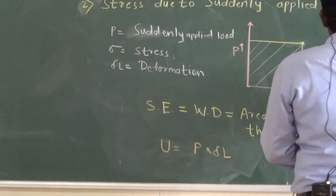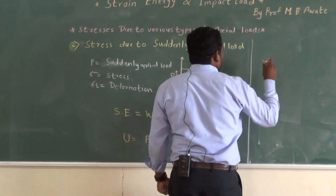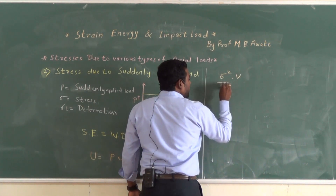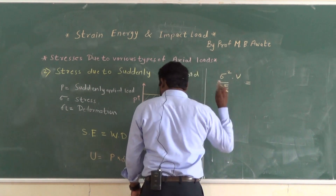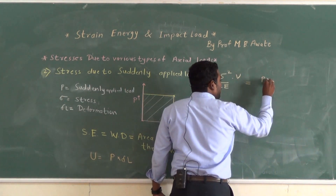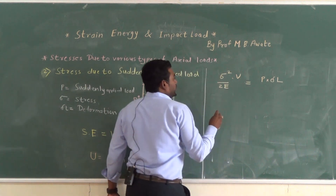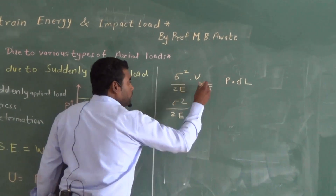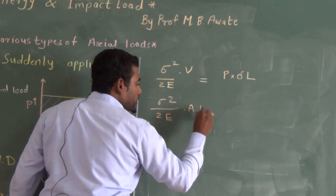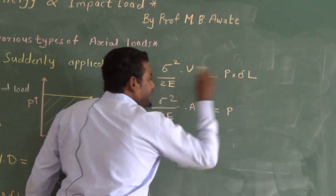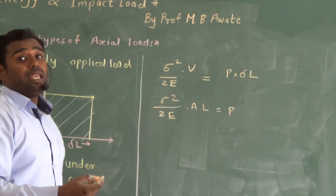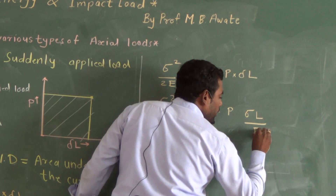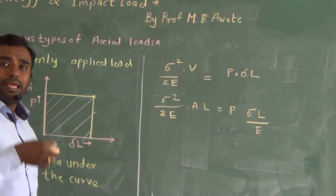U is the strain energy. The formula for strain energy is sigma squared into V divided by 2E. That is equal to the area under the curve, which is P into delta. So: sigma squared upon 2E, multiplied by the volume (written as the product of area A and length L), is equal to P multiplied by delta, where delta can be written as sigma times L upon E.